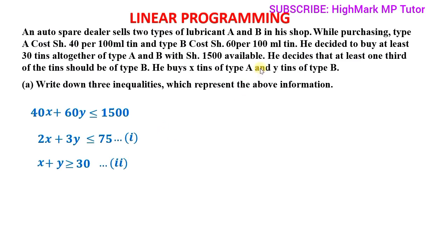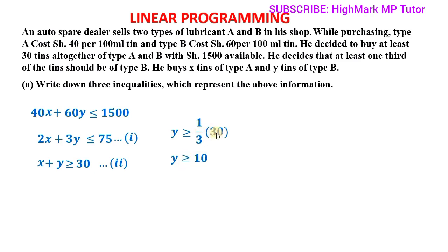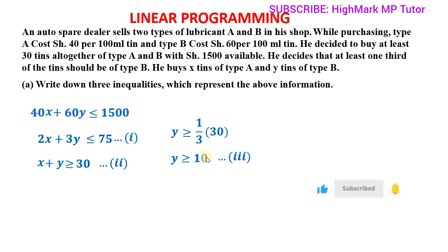The third inequality comes from the statement that at least one third of the tins should be of type B. Type B tins are Y, and at least one third of the total 30 tins means Y ≥ one third of 30, which gives Y ≥ 10. This is our third inequality, and with this we answer part A of the question.